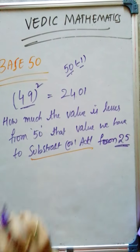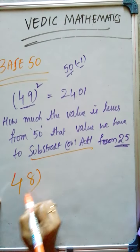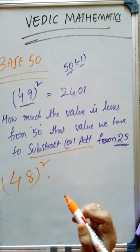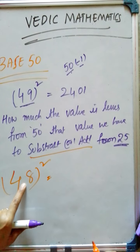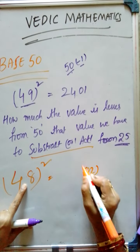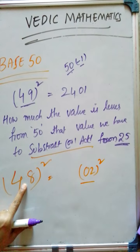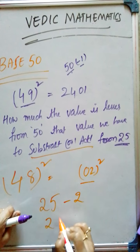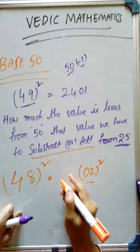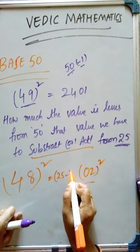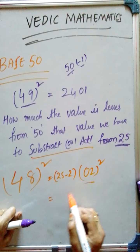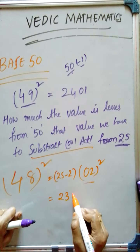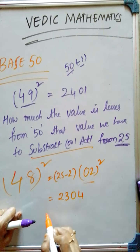Let us see with another example. 48 square. Now, how much it is lesser from 50? That is 2 square — we have to write 0, 4 in this position. And how much we have to subtract from 25? 25 minus 2, nothing but 23. We have to write 25 minus 2, that equals 23. And 2 square is 04. This is our answer.